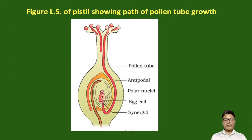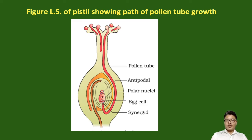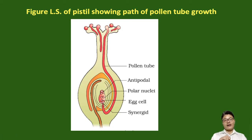This is a diagrammatic representation shown in your NCRT textbook — a longitudinal or vertical section of the pistil showing the path of pollen tube growth. This top-to-bottom cut section shows germination of compatible pollen grains and rejection of incompatible pollen grains. Compatible pollen grains undergo germination to form a pollen tube which enters inside the ovule and finally into the embryo sac.